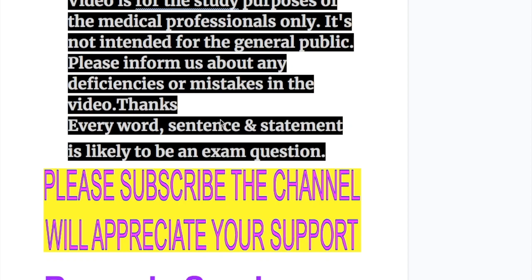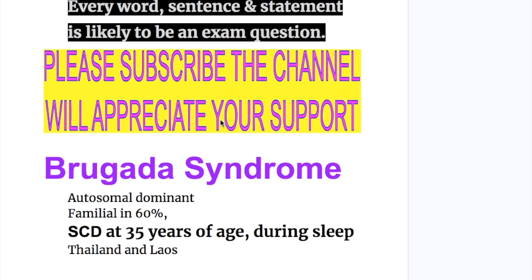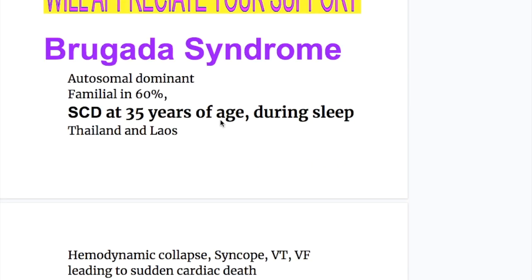In this video we will discuss Brugada syndrome: its etiology, pathology, clinical features, EKG features, and treatment. Brugada syndrome is an autosomal dominant disease that has a familial tendency in 60% of cases. There is sudden cardiac death at around the age of 35 years, especially during sleep. It occurs more in Asian people, particularly those from Thailand and Laos.